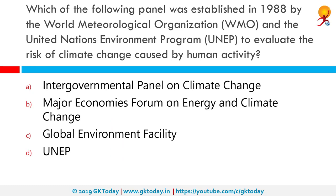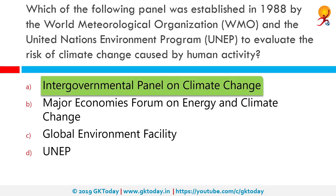Which of the following panels was established in 1988 by the World Meteorological Organization and the United Nations Environment Programme to evaluate the risk of climate change caused by human activity? The correct answer is the Intergovernmental Panel on Climate Change. It is a body of the United Nations dedicated to providing the world with an objective scientific view of climate change, its natural, political and economic impacts and risks, and possible response options.